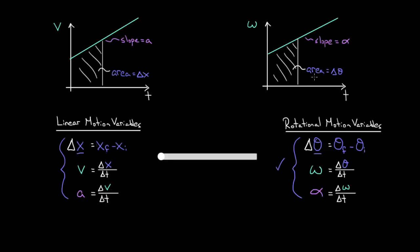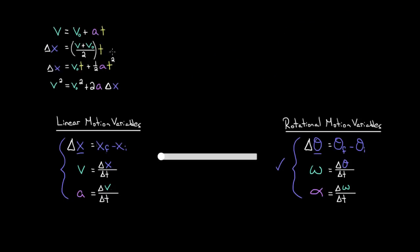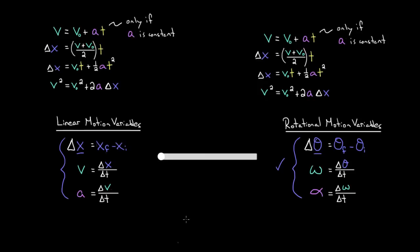Since we know the relationship between all the rotational motion variables is the same as the relationship between the linear motion variables, we can make rotational kinematic formulas simply by replacing all the linear variables with their rotational counterparts. We already know the four linear kinematic formulas that relate the linear motion variables — but remember, these only work if the acceleration is constant. To get rotational kinematic formulas, we could derive them using areas under curves, or we can just substitute.